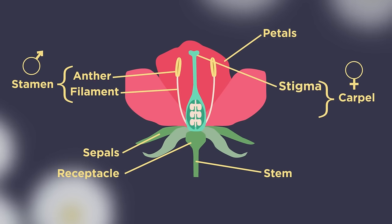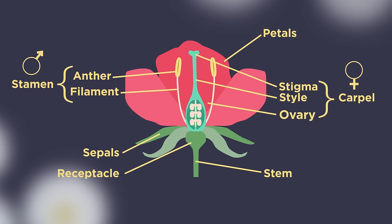The female part of the flower is called the carpel, and this consists of three parts: the stigma, a sticky landing for pollen; the style, where the pollen grain descends; and the ovary, where the female gametes or ovules are located. Within the ovary, ovules produce female gametes.